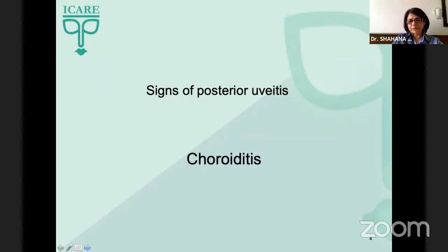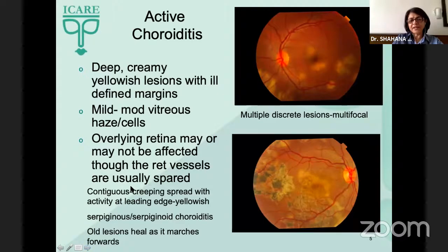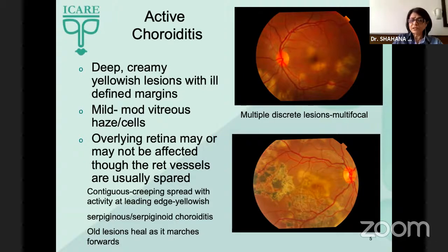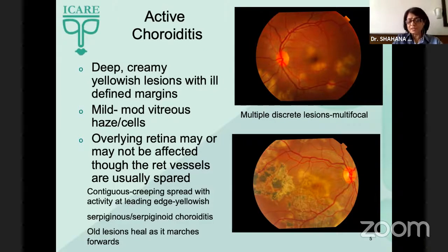Coming to the signs of posterior uveitis, starting with choroiditis: an active choroiditis lesion is a deep, creamy, yellowish lesion with ill-defined margins. There is usually mild to moderate vitreous haze or cells. The overlying retina may or may not be affected, but even if affected, the retinal vessels are usually spared.